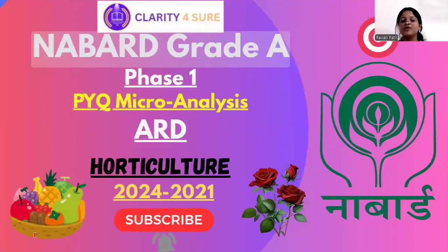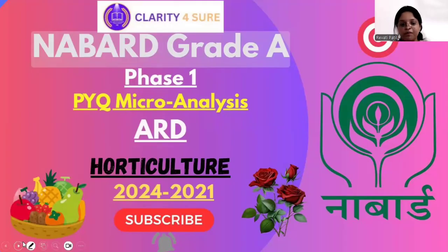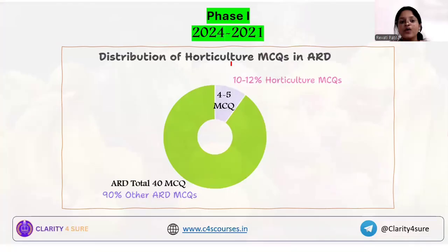Hello everyone. I welcome you to the PYQ microanalysis series for NABARD Grade A Phase 1, that is for ARD — Agriculture and Rural Development. Today we are going to do the microanalysis for horticulture in the ARD merit section.